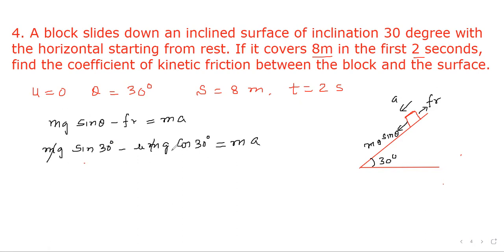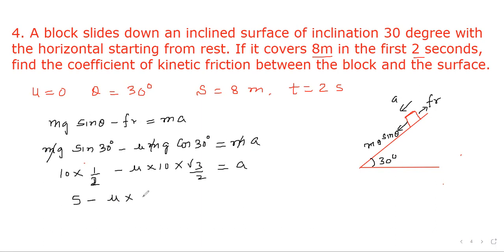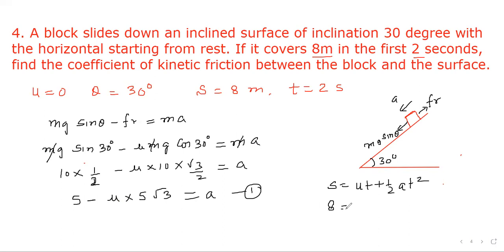The m cancels out. With g = 10: 10 × (1/2) − μ × 10 × (√3/2) = a, giving 5 − 5√3 μ = a. Now using s = ut + ½at²: s = 8 meters, starting from rest so u = 0, t = 2 seconds. This gives 8 = ½ × a × 4, so a = 4 m/s².